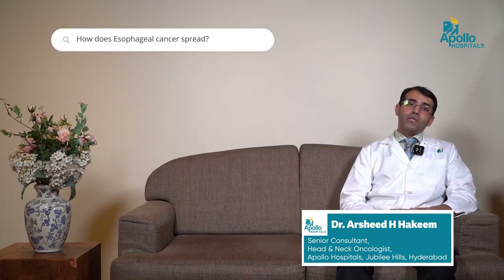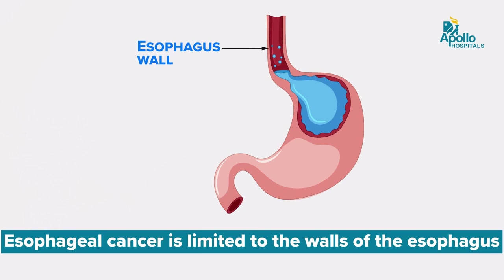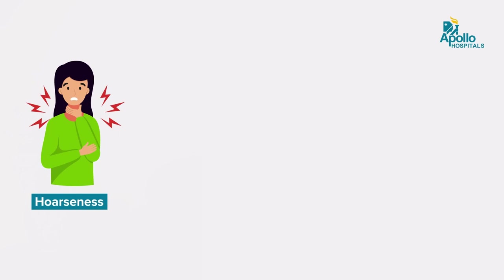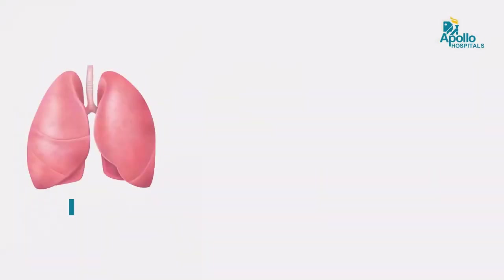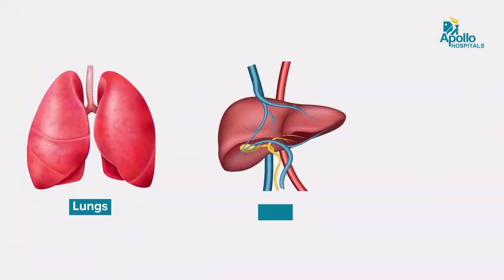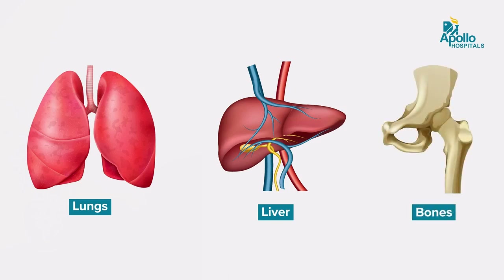How does esophageal cancer spread? Initially it is a localized disease, present just in the walls of the esophagus. If it is not treated, it may progress to involve all of the surrounding structures, causing hoarseness or lymph nodes in the neck or mediastinum. It may also cause distant metastasis — most commonly to the lungs, liver, and bones.